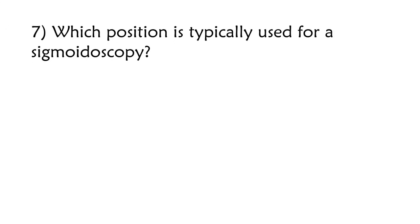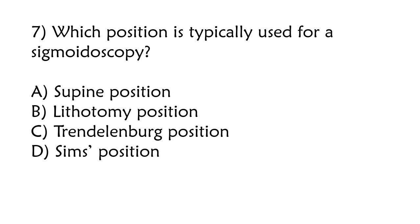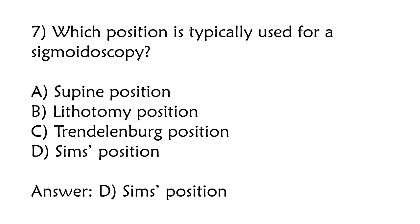Which position is typically used for a sigmoidoscopy? Supine position, Lithotomy position, Trendelenburg position, Sims position. The correct answer is Option D: Sims position.